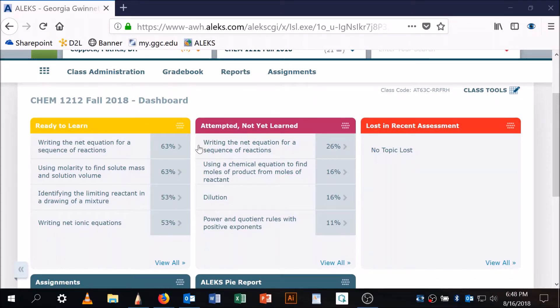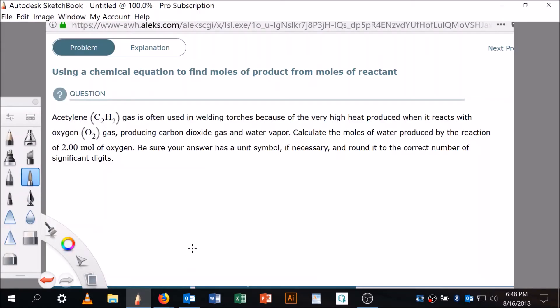All right, so we're back at it. Using a chemical equation to find the moles of product from moles of reactants. By the way, I did this one yesterday, writing the net equation for a sequence of reactions, so you can go look for it if you're interested. Using a chemical equation to find the moles of product from moles of reactants - that's what we're going to do right now. I've already got my whiteboard ready for that.